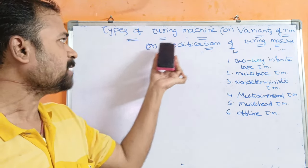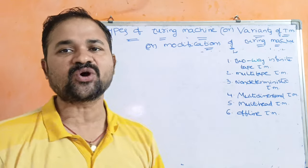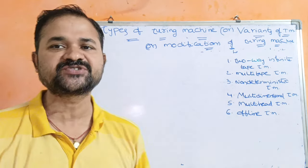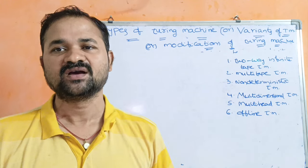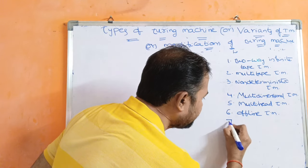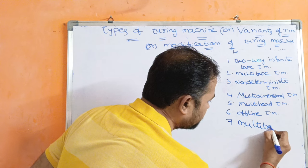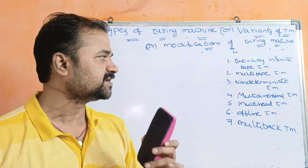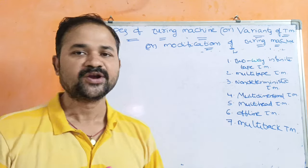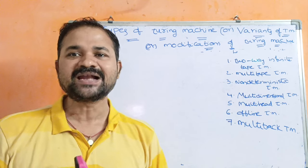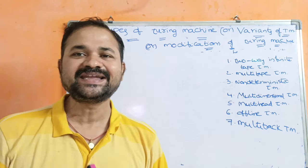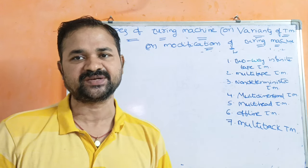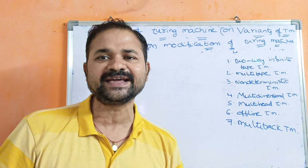Let us discuss the types of Turing machines — variants or modifications of Turing machines. Mainly we have 7 types of Turing machines available: the first is the two-way infinite tape Turing machine, second is multi-tape, third is non-deterministic, fourth is multi-dimensional, fifth is multi-head, sixth is offline, and seventh is multi-track Turing machine.